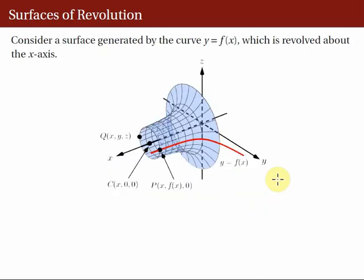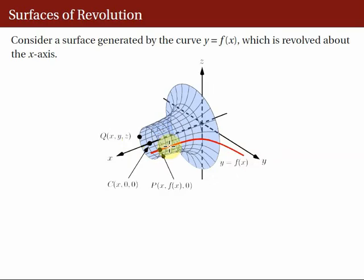In this slide, we derive an equation of a surface of revolution satisfying those conditions. Let's consider the surface of revolution generated by the curve y = f(x) revolved about the X-axis. The generating curve is the red curve — the graph of y = f(x) lying on the XY coordinate plane. The point P is a point on the curve with coordinates (x, f(x), 0).